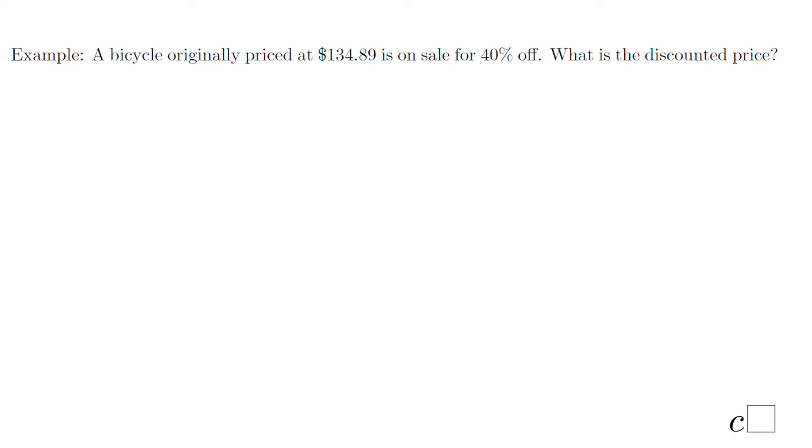The last problem in this lesson is going to be about a discount. You notice we have a bicycle which cost $134.89. We have a discount of 40 percent. That will be 0.4. Again, you move the decimal point twice to the left or use the 40 over 100 if you want. Now we're going to multiply this 0.4 times $134.89. Let's see how much that is.